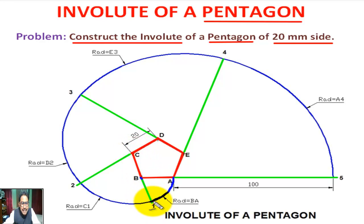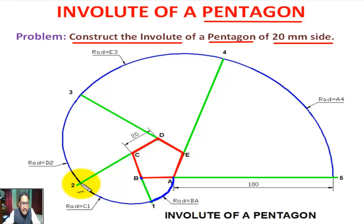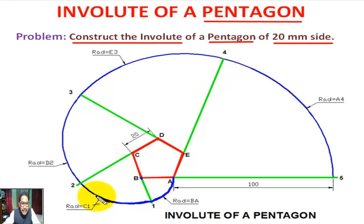Now, with C as center and C1 as radius, draw an arc to intersect the DC extension at point 2.